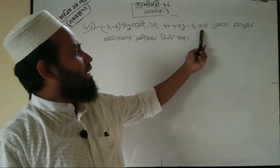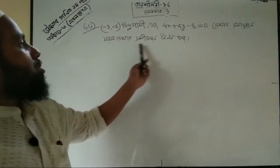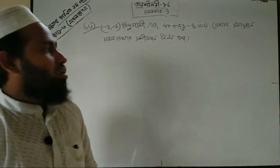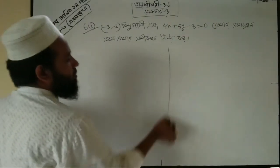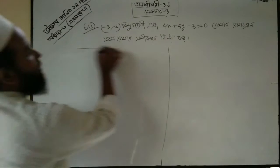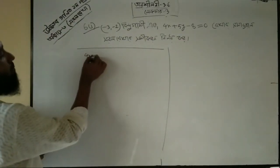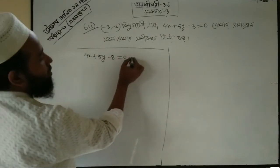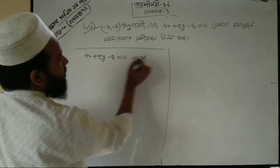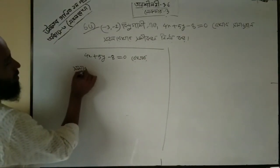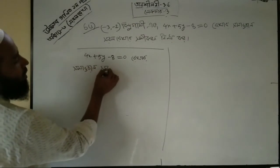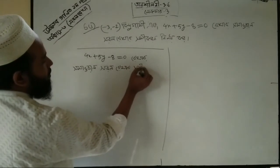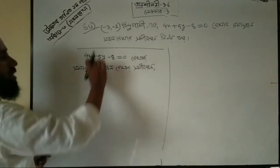We have 4x plus 5y minus 8 equals 0. This is the same equation — we can add the equations since they are the same.